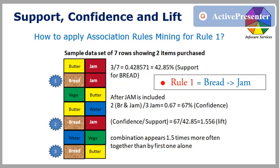This would be 2 divided by 3, equal to 0.67 or 67%. Now lift is confidence divided by support. So 67 divided by 42.86 is 1.556. What we find from mining this sample dataset is people are 1.5 times more likely to buy bread and jam together than bread alone. And this is how association rules mining is done.